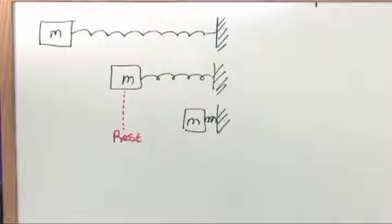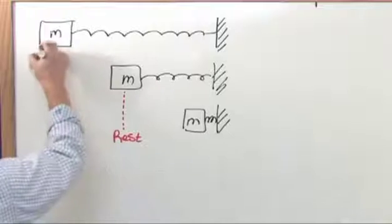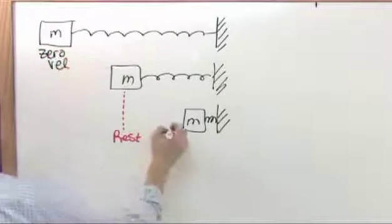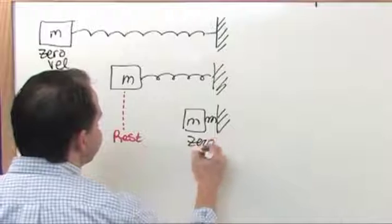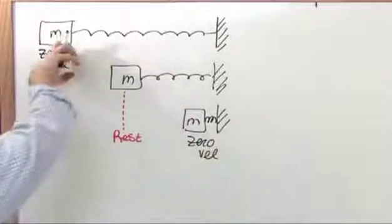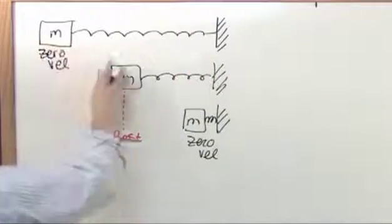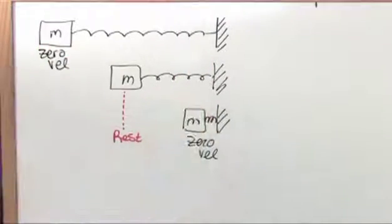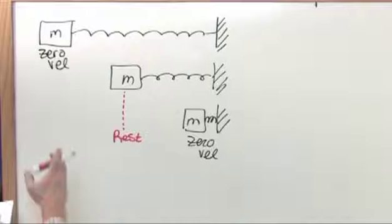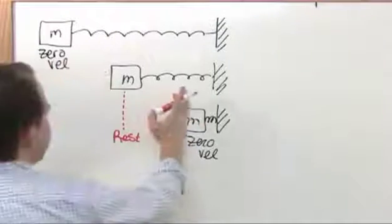It says it takes 0.25 seconds to travel from one point of zero velocity to the next. You have to know that this is zero velocity and this is zero velocity. Because here is where the spring just slows down to turn around and here is where it slows down to turn around. So at those two moments, at those two extremes, the velocity is zero.